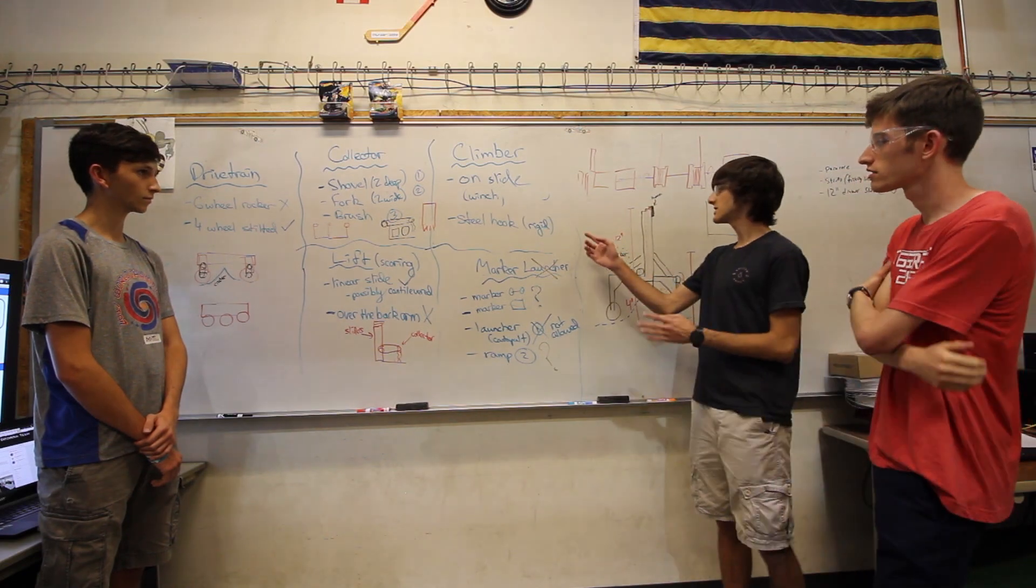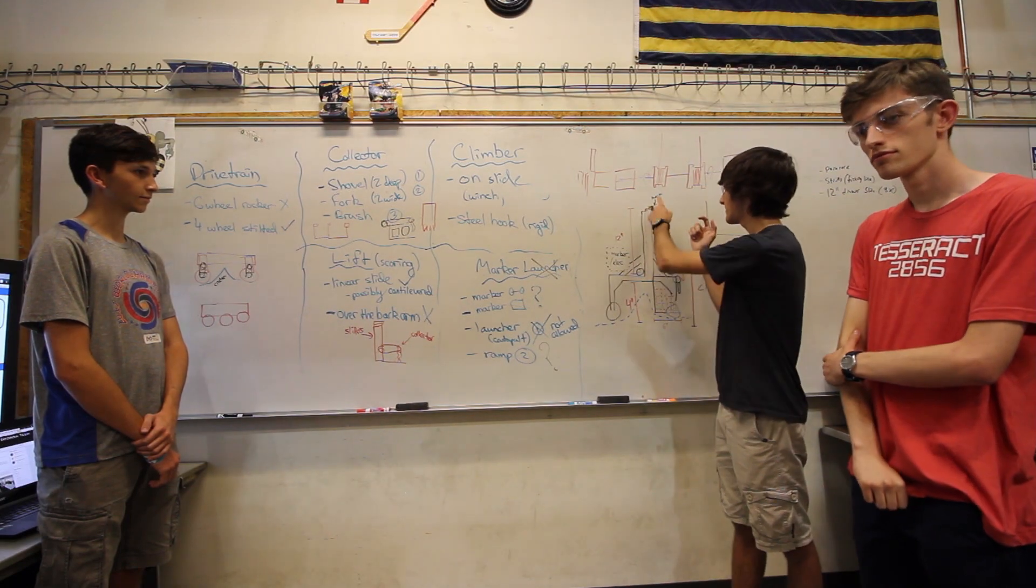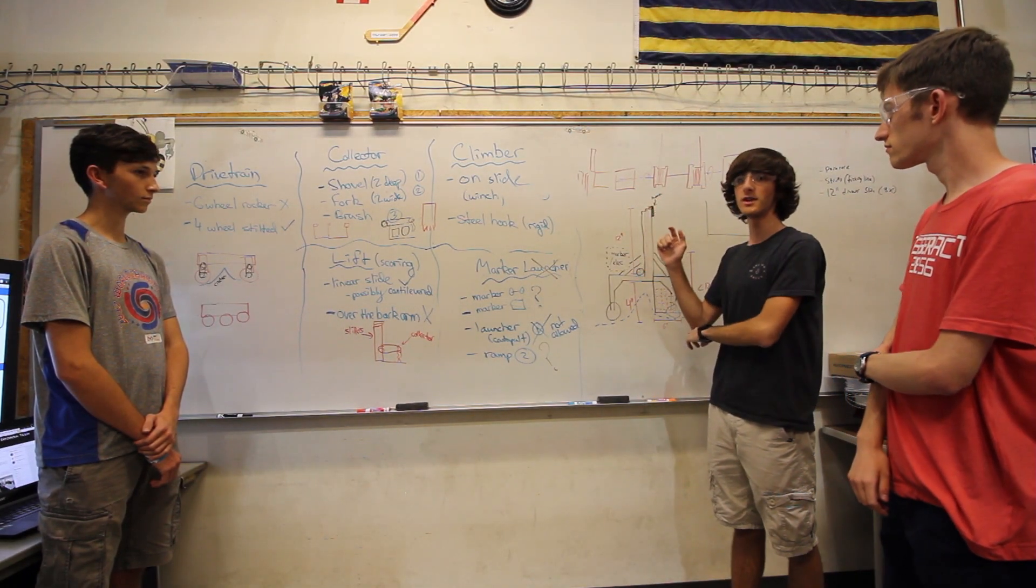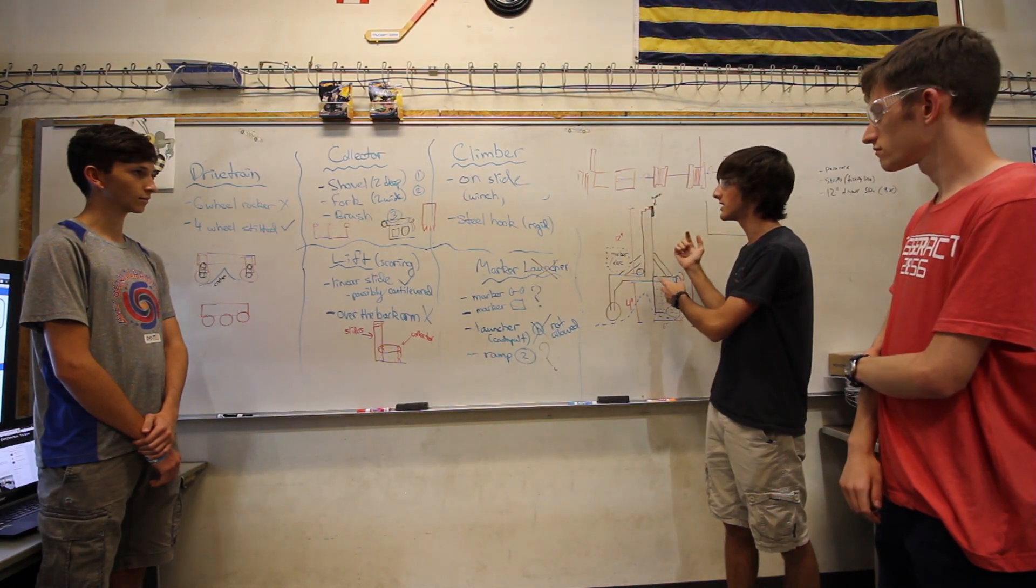We're going to attach a climber onto the lifter on the side, which is just going to be a hook. We're going to have a back drive to our motor so we'll be lifting our winch, and we'll be able to pull ourselves up using that same lift.